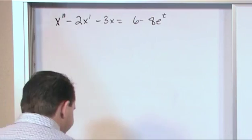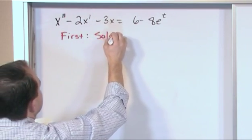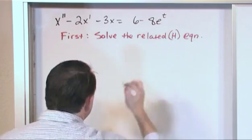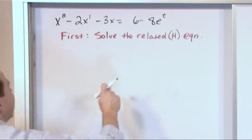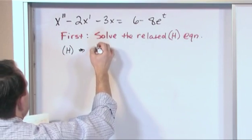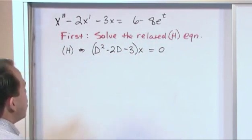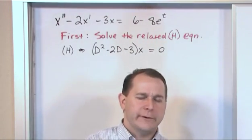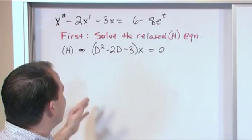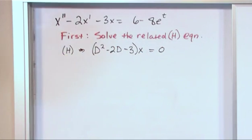So the first thing we need to do — step number one — is we're going to solve the related homogeneous equation. What do I mean by that? We are literally going to take the right-hand side and just set it equal to 0. So the related homogeneous version, converting to operator notation, is d squared minus 2d minus 3 operating on x equals 0. All we did is literally take the right-hand side and set it equal to 0. That's what we call the related equation.